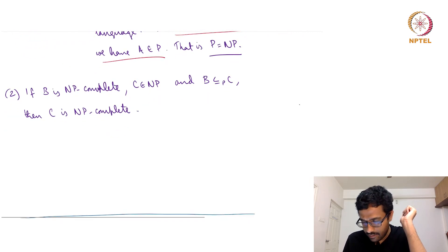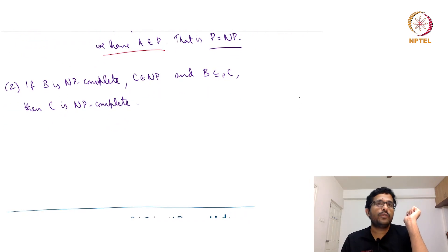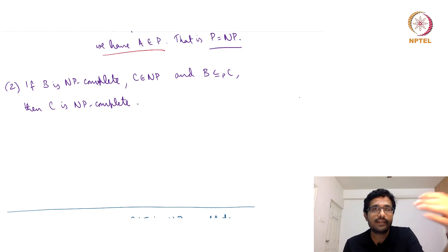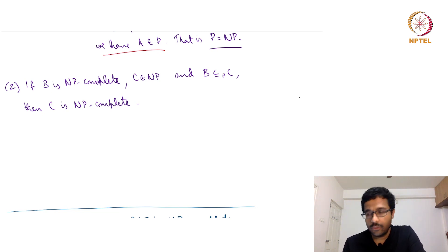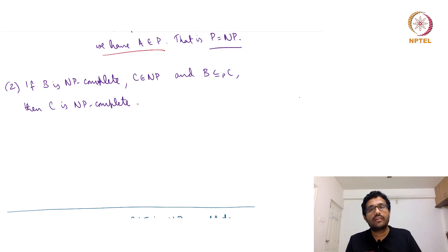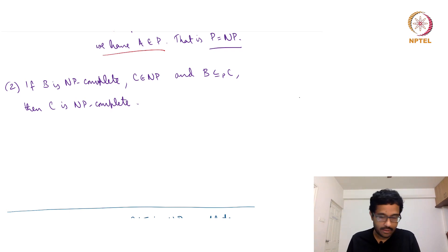The next consequence I want to mention is: suppose B is an NP-complete language, and suppose C is another language in NP, and suppose we can reduce B to C in polynomial time — then C is also NP-complete. So: B is NP-complete, C is in NP, and B reduces to C in polynomial time implies that C is also NP-complete.